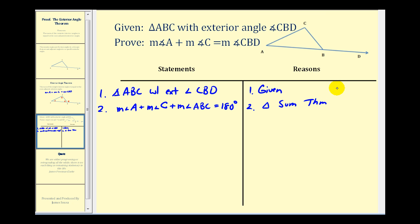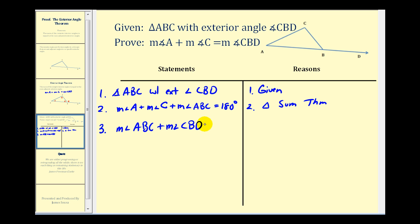Notice how we had to identify angle B by using three vertices because there are two angles located at vertex B. We also know the measure of angle ABC plus the measure of angle CBD is equal to 180 degrees, and the reason for this is the definition of a linear pair of angles.